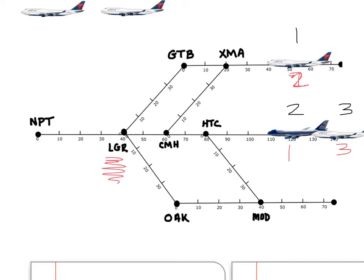The initial speeds are going to be: this one is going to be 360, this one is going to be 360, and this one is going to be 480. We need this one to be first once they get beyond this point, we need this one to be third, and this has got to be in between those two. What would have to happen in order to make that occur?